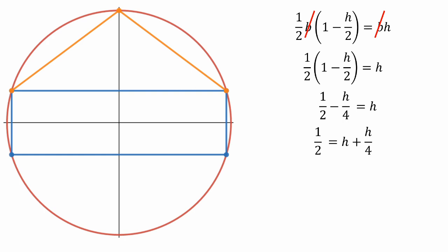If we move the h over 4 to the right side of the equation, we're going to have one-half is equal to h plus h over 4, or one-half is equal to five-fourths h. Now, we can easily solve this and get the final result, which is h is equal to two-fifths.